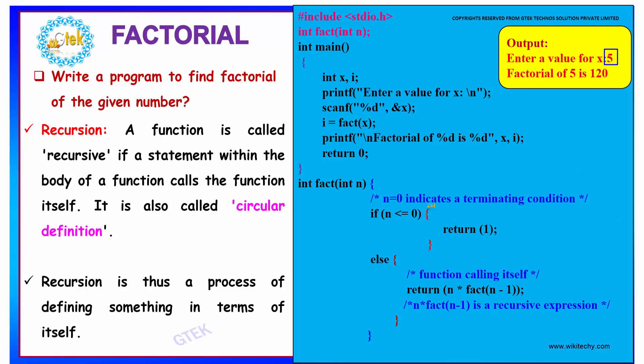If the value of n, that is the value to which you have to find the factorial, is less than or equal to 0, then we have to return 1.